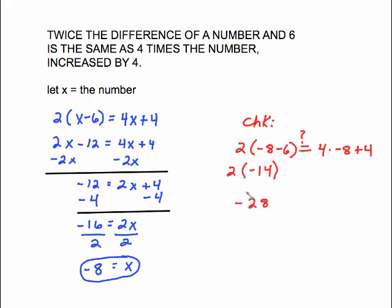2 times negative 14 is negative 28. On this side order of operations tells me to do the multiplying first so 4 times negative 8 is negative 32. Negative 32 plus 4, those are different signs. Keep the sign of the larger which is subtract, which is a negative, and subtract gives us negative 28. Those are the same and it does check.